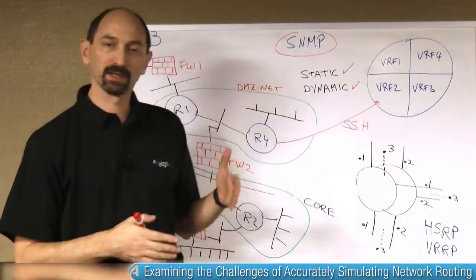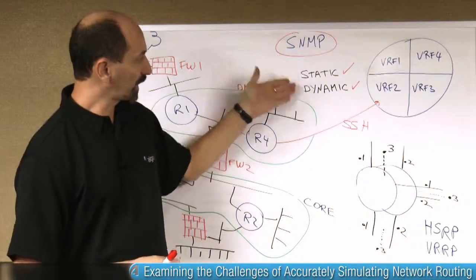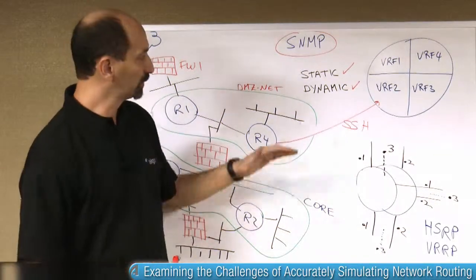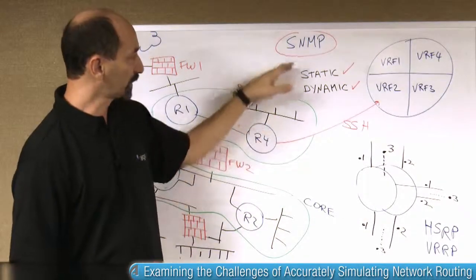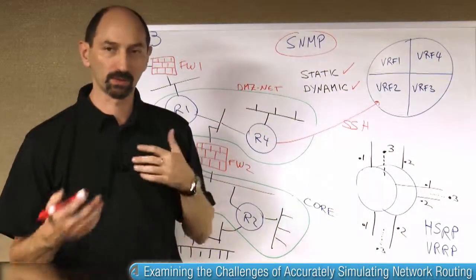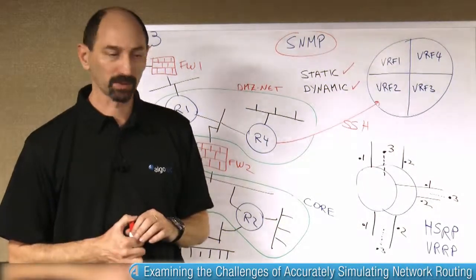And the distinction is that typically there are different commands that extract these types of routes. So you have to remember to issue both types of commands to extract both the static and the dynamic routes. Otherwise, you only have a partial picture of the routing that that router is implementing.